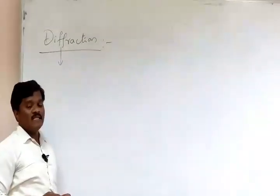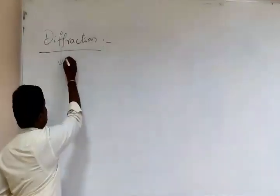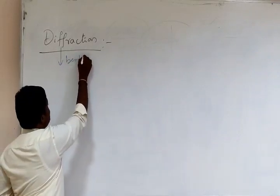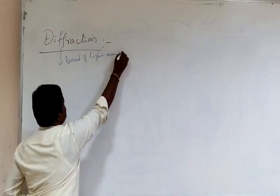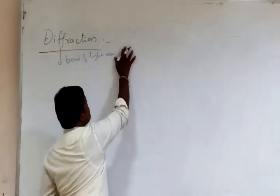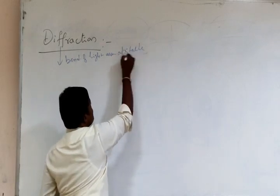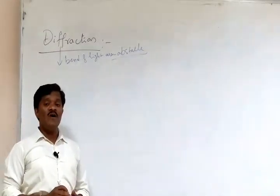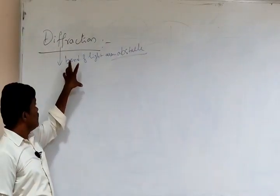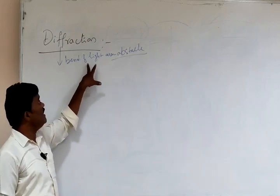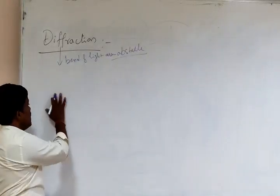So what is meant by diffraction? Basically, diffraction is nothing but the bending of light around an obstacle. So we need to understand what type of obstacle that is.